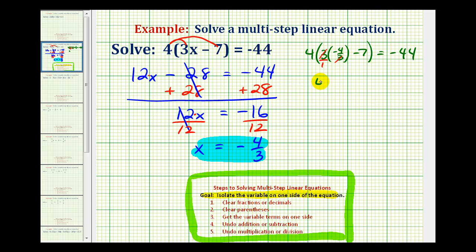Well that would be four times negative eleven equals negative forty-four. And that's good news because four times negative eleven is negative forty-four.